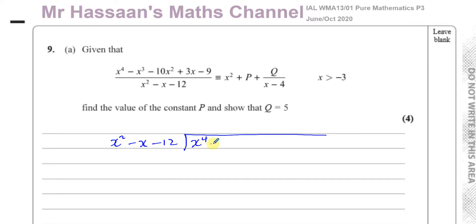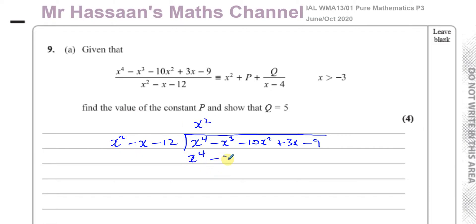x to the power 4 minus x to the power 3 minus 10x squared plus 3x minus 9. Just make sure you don't make any mistakes copying the numbers down. So x squared times something gives you x to the power 4 — that's x squared. Write that on the top. x squared times each of these terms will give you x to the power 4 minus x to the power 3 minus 12x squared.